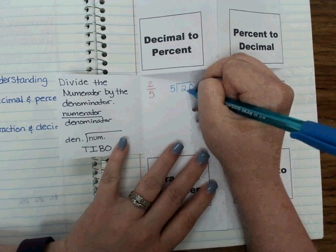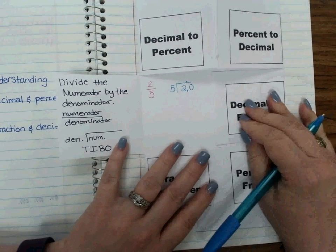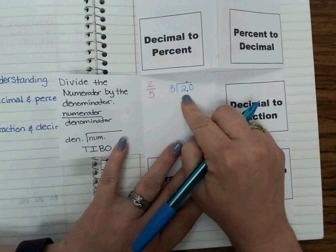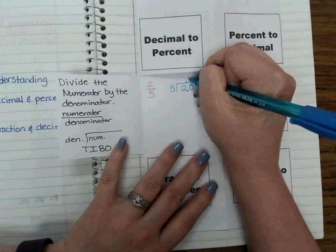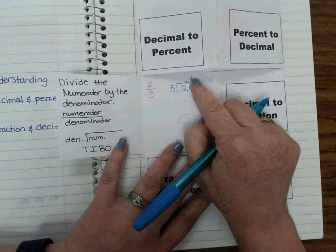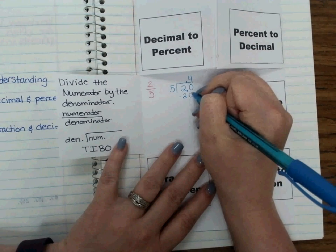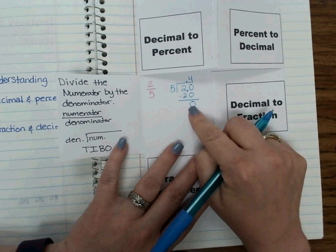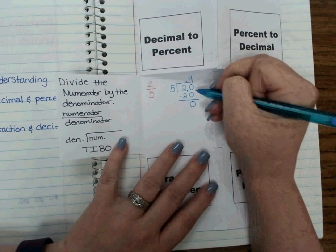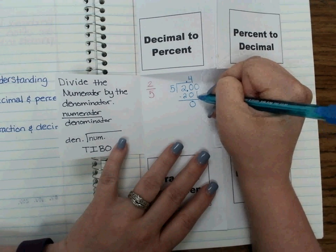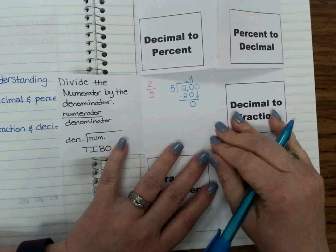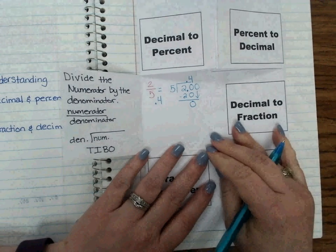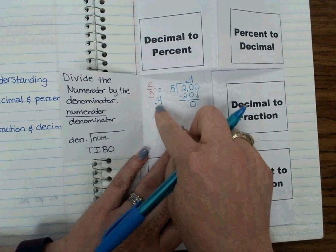Okay, I'm going to bring my decimal point on top of my house, and now I can say 5 goes into 20. 5 goes into 20 how many times? Well, 5 times 4 is 20, so 5 goes into 20 four times. 4 times 5 is 20. I subtract that out. I get 0 left over, and now I know I'm done. If I came up with something that wasn't a 0 number, I'd have to add another 0 here and bring it down as we move through that. But in this case, two-fifths is equal to 0.4. Okay, so I've changed my fraction into a decimal by dividing.